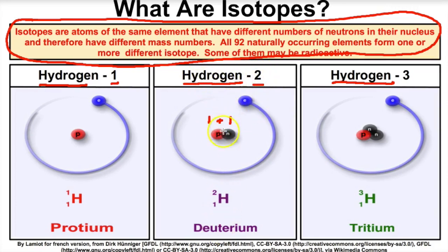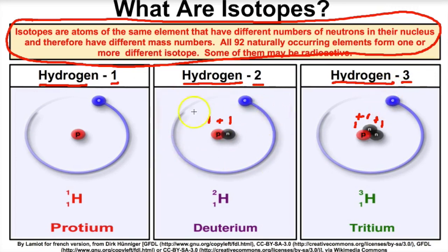So deuterium, or hydrogen-2, has one proton and one neutron in its nucleus. And if we take a look at hydrogen-3 or tritium, it has one proton and two neutrons — add these together, you get three. So once again, isotopes are atoms of the same element that have different numbers of neutrons inside of their nucleus, and therefore they're going to have different mass numbers or atomic masses.